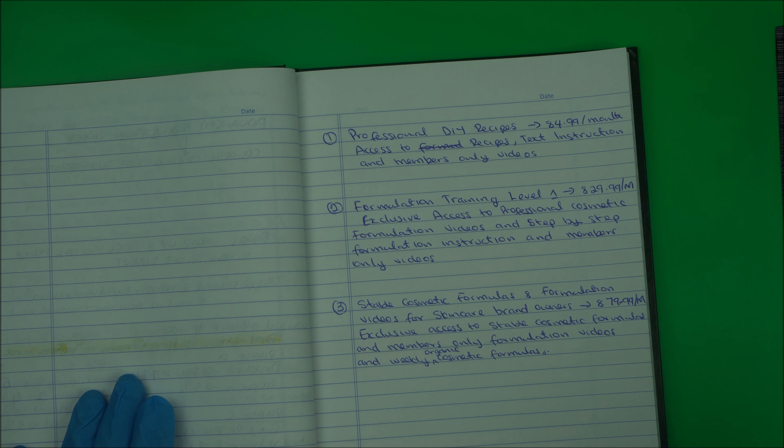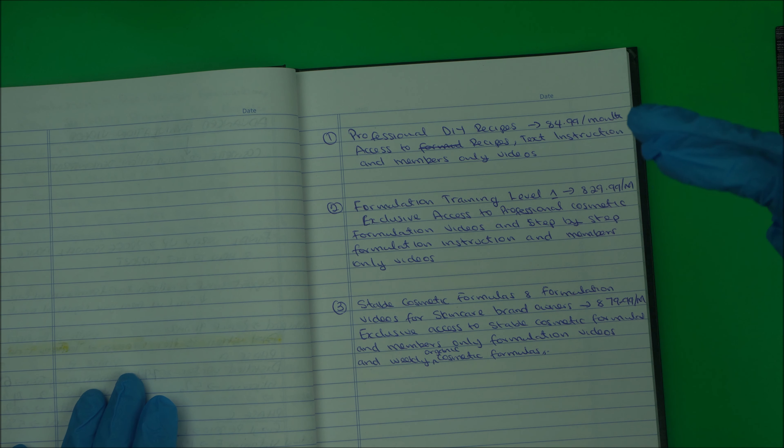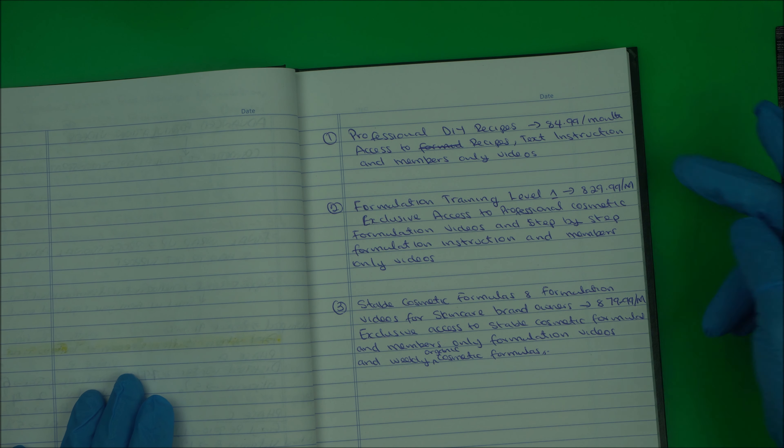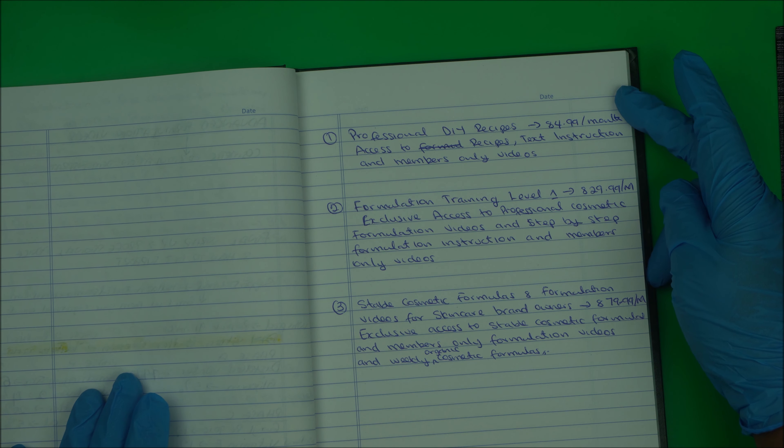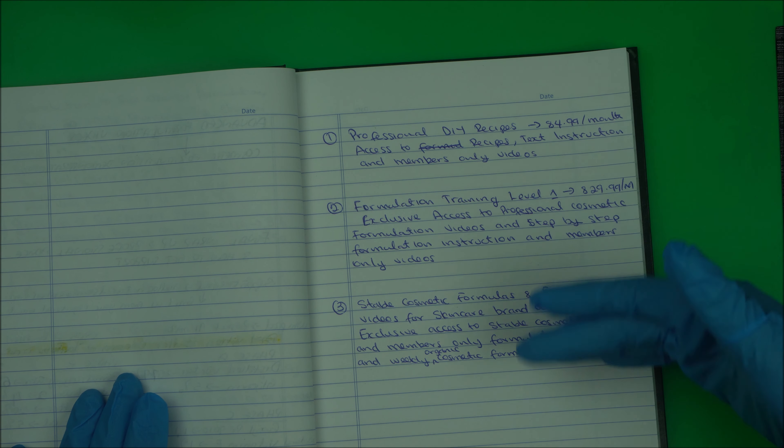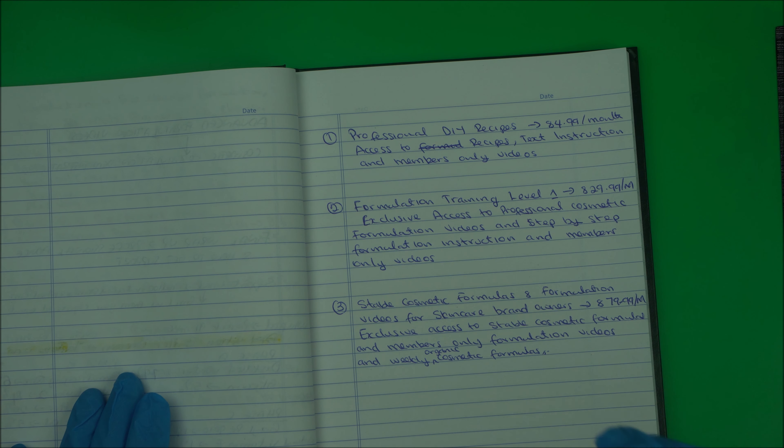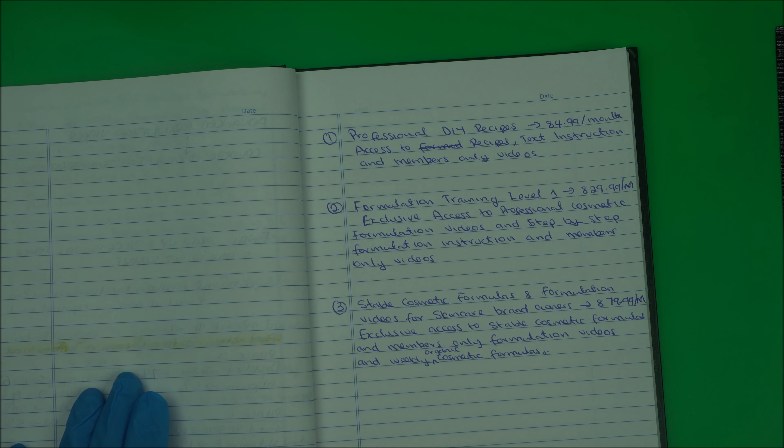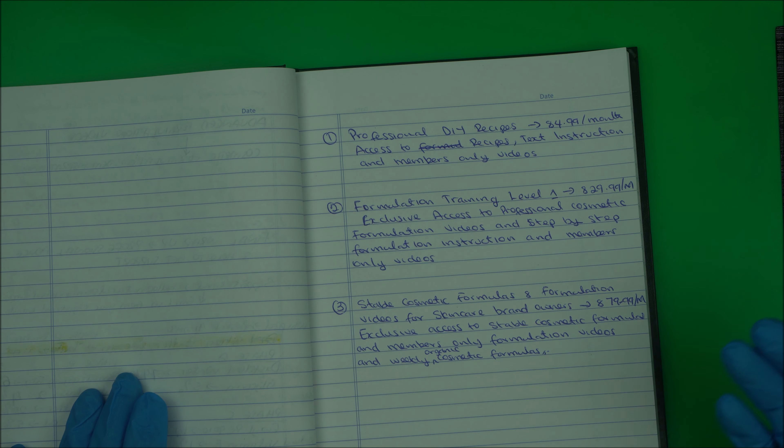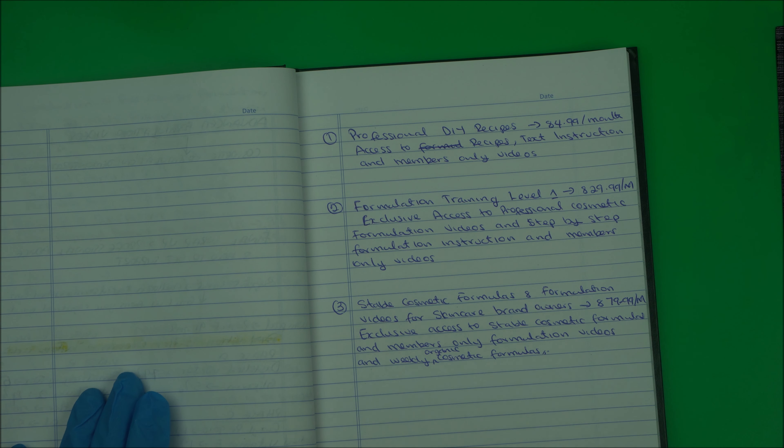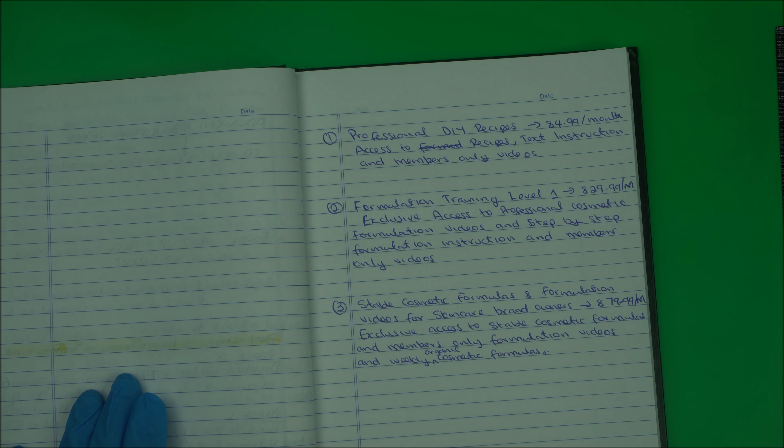If you want to learn how to make skincare, I suggest you start with these, and you can always upgrade your level as you go on. The $4.99 per month option is for those who don't know how to make skincare. Second option is for those who want to learn how to formulate, they have a bit of DIY experience and want to learn how to make more professional cosmetic products. The final one, if you have a skincare brand, you know how to formulate but want to make more effective, stable products, the last membership option is for you.